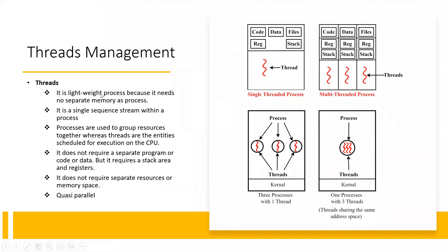Threads — we can say it is a lightweight process. A program under execution is known as a process. Threads is a lightweight process. It is called lightweight because, in the case of processes, separate memory is allocated. In the case of Threads, there is no separate memory allocation — the process memory is allocated, and Threads use a portion of that.